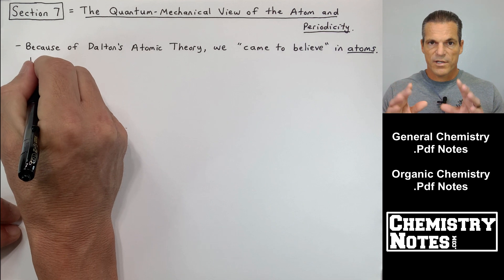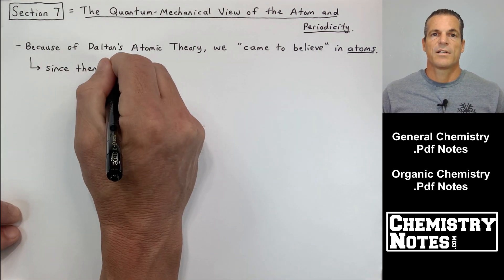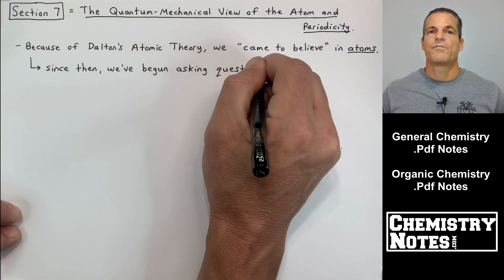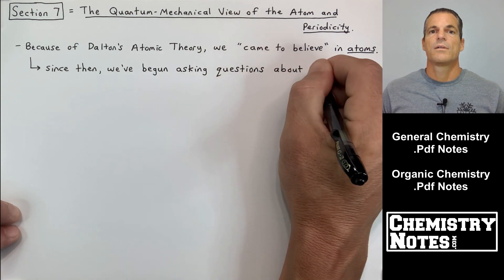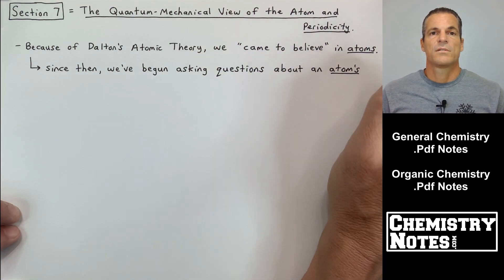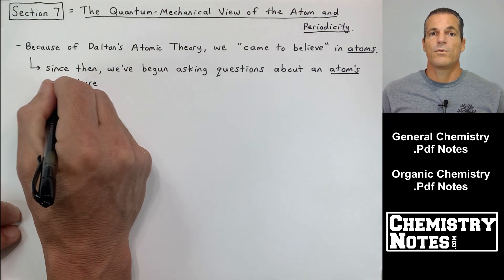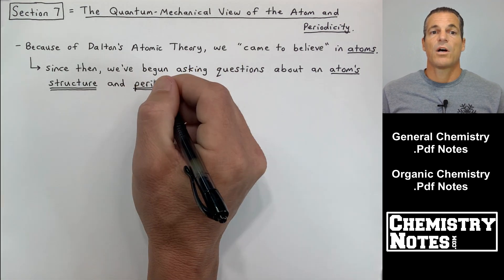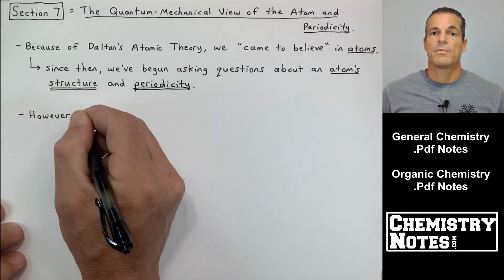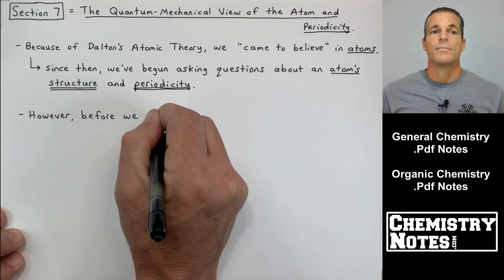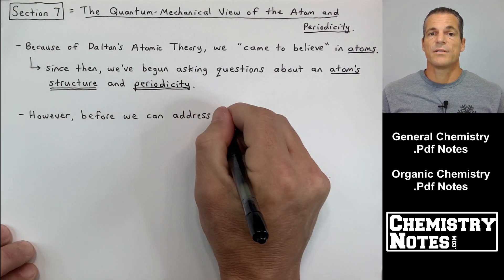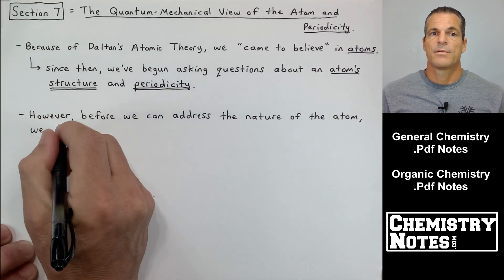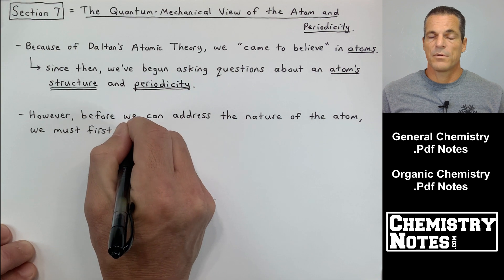So I'm going to try my best to stay focused on the notes on the page so that this course section seven flows and is easy to understand. Let's get started. Page one of our notes: section seven, the quantum mechanical view of the atom and periodicity. Because of Dalton's atomic theory, we came to believe in atoms. Since then, we've begun asking questions about an atom's structure and about an atom's periodicity.